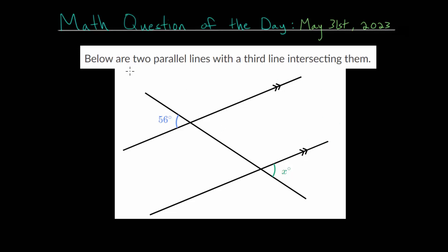And with this problem, we're given two parallel lines with a third line intersecting them. And we need to figure out this missing angle x.